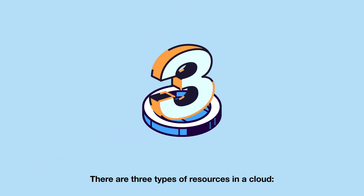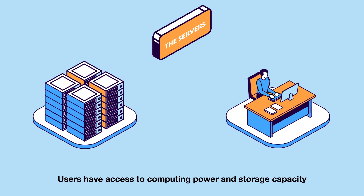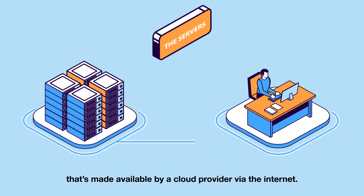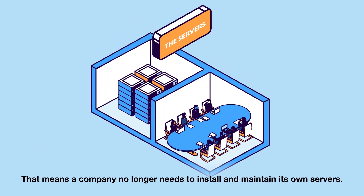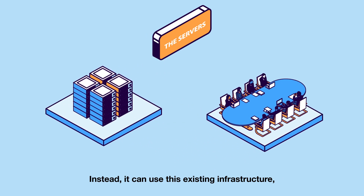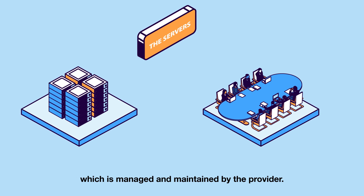There are three types of resources in a cloud. First, the servers where the data is stored and processed. Users have access to computing power and storage capacity made available by a cloud provider via the Internet. That means a company no longer needs to install and maintain its own servers. Instead, it can use this existing infrastructure, which is managed and maintained by the provider.